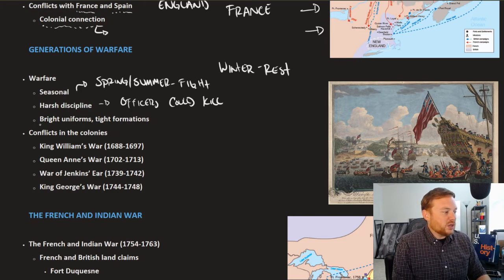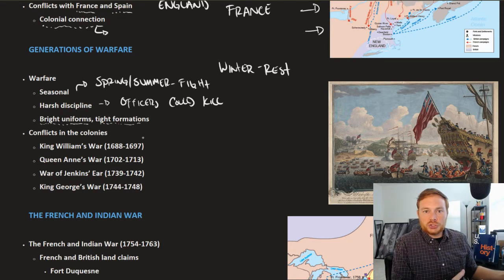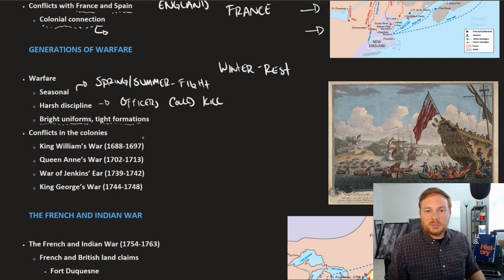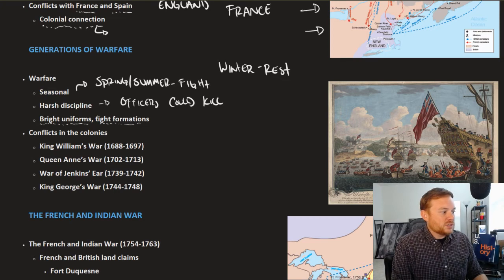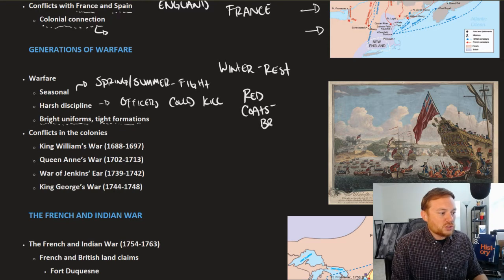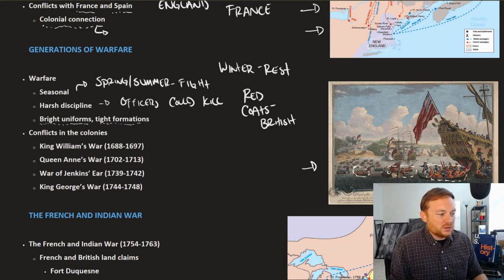Generally speaking, troops fought with very bright uniforms and tight coordinated formations on the battlefield — shoulder to shoulder. The weapon of choice was a musket, and two armies would typically engage lined up and fire essentially into each other's faces. For our class, it's important to note that the British wore bright red — the red coats. That's how the British distinguished themselves on the battlefield.